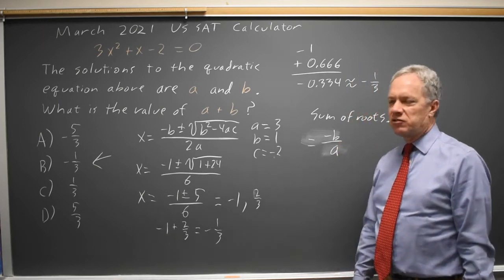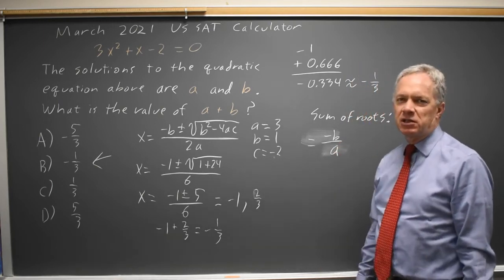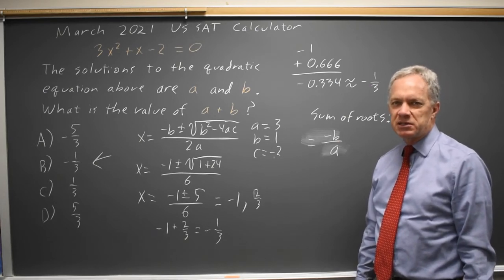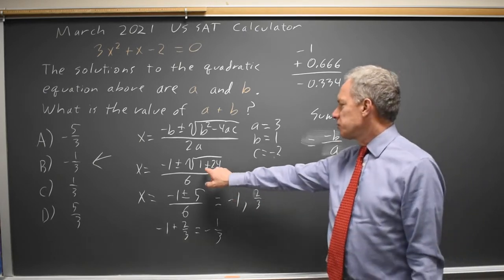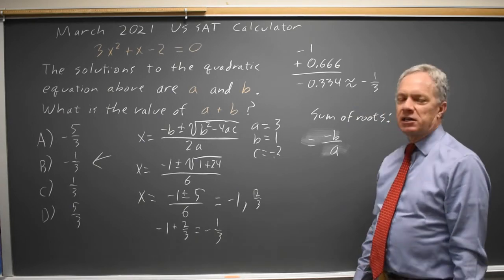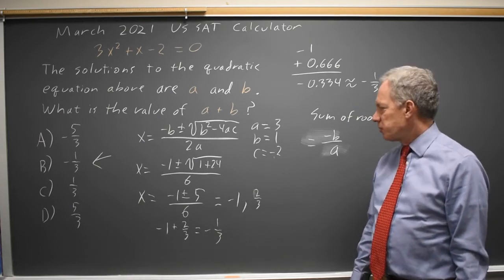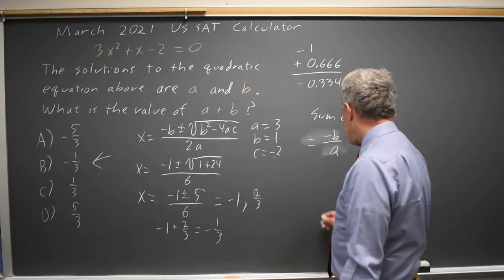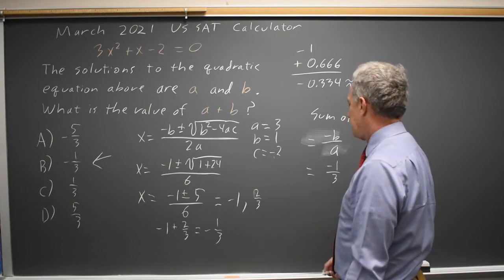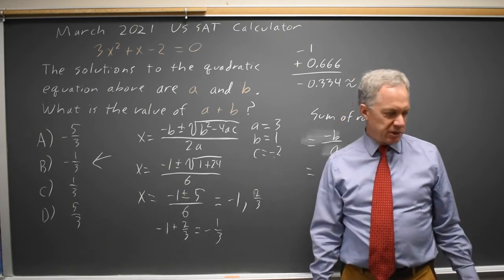One root is negative B over 2A plus something, the other is negative B over 2A minus the same thing, so these square roots will cancel, and you get negative 2B over 2A, which is negative B over A, and in this case, this is negative 1 over 3, which is the answer we found by the other two methods.